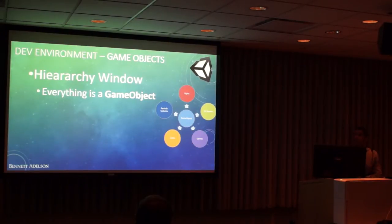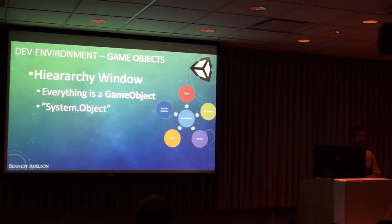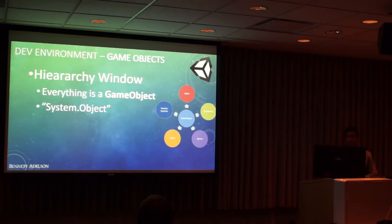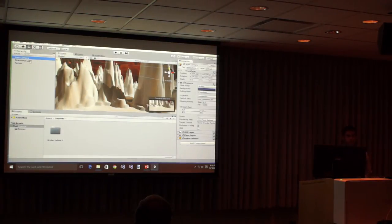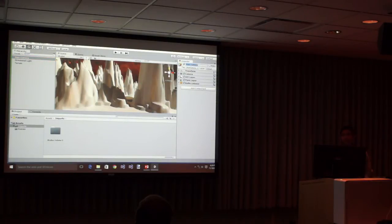The hierarchy window — we've been talking about this briefly. Everything is a game object sitting inside there. In the normal .NET world you've got System.Object; in the Unity 3D world you kind of have game object. Anything you're programming with, its base class is relatively going to be the game object. When you have lights, 3D models, or sprites in the system, they are all game objects. Every game object has a name, a tag, and a transform on it.